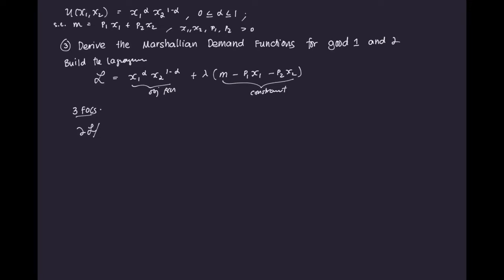The three FOCs are: the partial derivative of the Lagrangian with respect to x1, the partial derivative with respect to x2, and the partial derivative with respect to lambda — and we're going to equate each of these equal to zero. Deriving with respect to x1, we get α·x1^(α−1)·x2^(1−α) plus lambda times negative p1, all equal to zero.